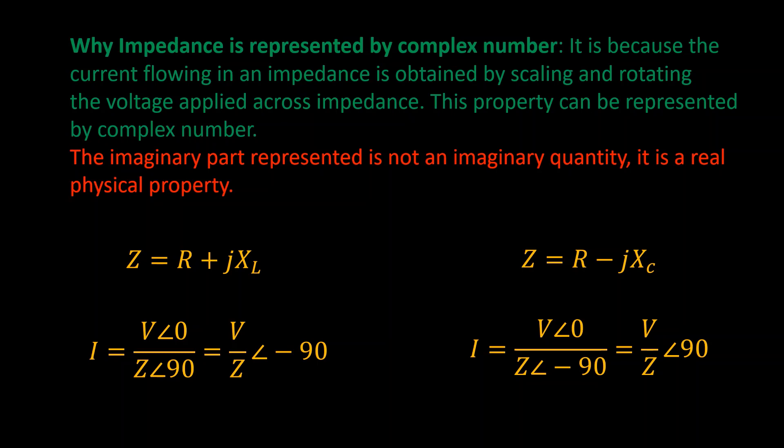How we decided that it will be plus in case of inductance and minus in case of capacitance: it is because the inductor has a property which lags the current from voltage. So only a complex number with positive imaginary part can do this thing.